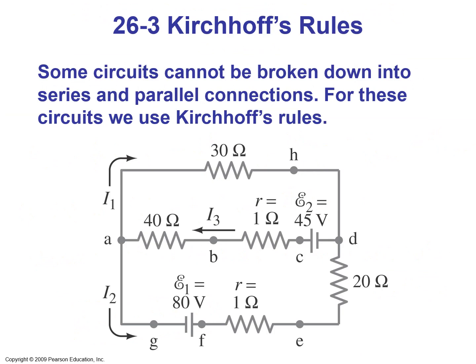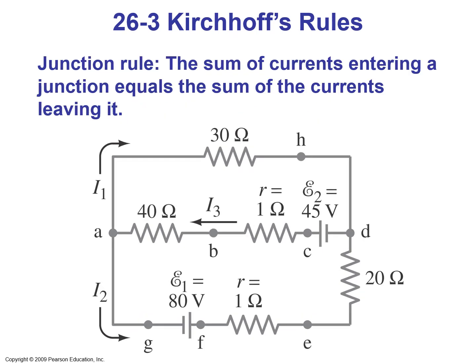Section 3: Kirchhoff's rules. Some circuits cannot be broken down into series and parallel connections. For these circuits, we use Kirchhoff's rules. The junction rule says the sum of currents entering a junction equals the sum of currents leaving it. For example, at point A, current I3 enters from the right and currents I1 and I2 exit, so I3 equals I1 plus I2.